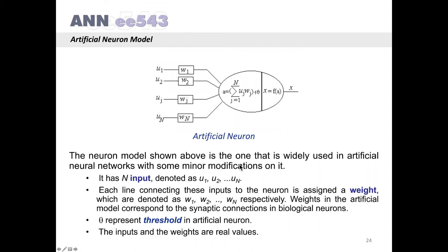The neural model shown above is the one that is widely used in artificial neural networks with some minor modifications. It has N inputs denoted as U1, U2, Uj up to UN. Each line connecting these inputs to the neuron is assigned a weight, which are denoted as W1, W2, Wj up to Wn respectively. Weights in the artificial model correspond to the synaptic connections in biological neurons. Theta shown here represents threshold in artificial neurons. The inputs and the weights are real values. Theta is also a real value.